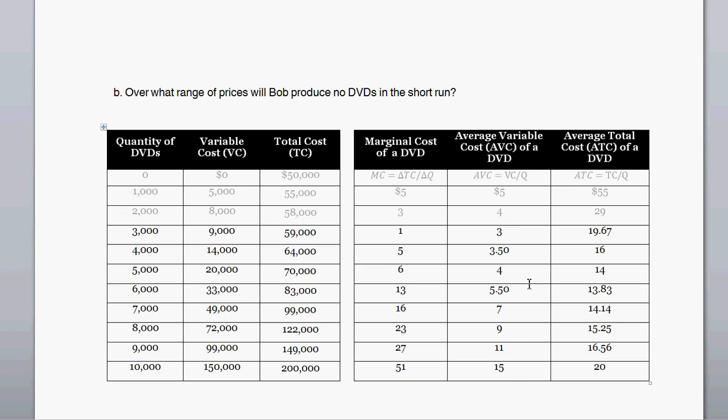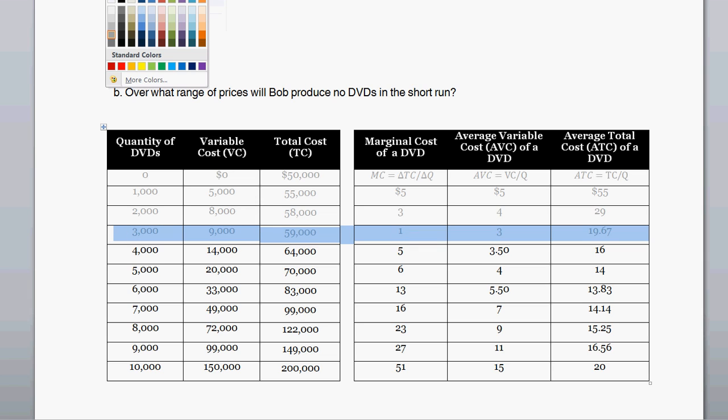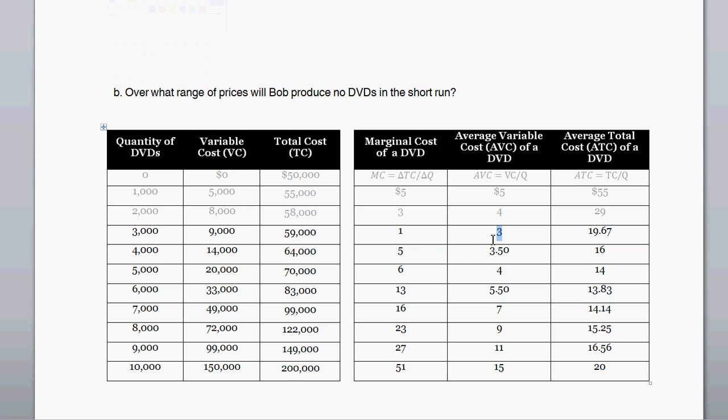So here's variable cost over different levels of production, and the smallest average variable cost is associated with 3,000 units produced. So for what range of prices will Bob produce no DVDs? The answer is anything less than $3. At any price below $3, Bob will produce no DVDs in the short run.